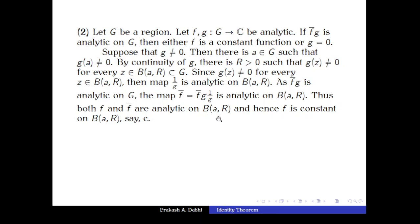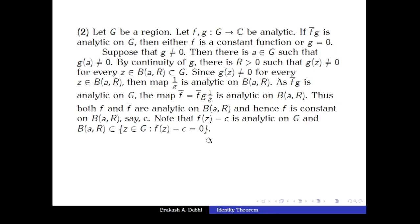So we have shown that both f and f̄ are analytic on B(a, r), and B(a, r) is a domain. It is known that if a function f and its conjugate f̄ are both analytic on a domain, then f must be a constant function. So f is constant on B(a, r); say f(z) = c for every z in B(a, r).